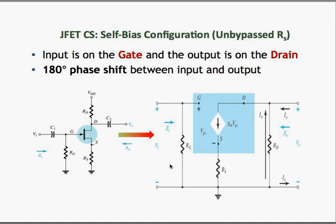In this next configuration, we have a self-bias configuration but with an un-bypassed source resistor — there is no capacitor connected in parallel with RS. Therefore RS remains in the circuit. Transforming this into an AC model, we get an equivalent circuit where the source resistor RS is still present because it is not bypassed by any capacitor.